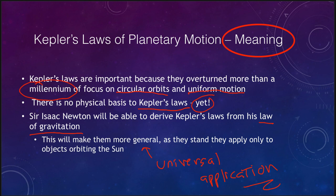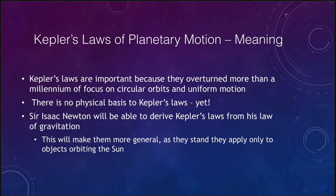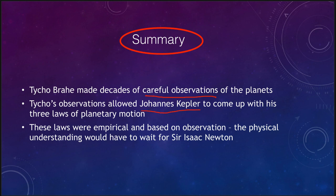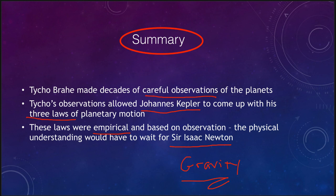To summarize: Tycho Brahe made many years of careful, extremely detailed and accurate observations of the planets — the most accurate of his time. His observations allowed Kepler to derive three empirical laws of planetary motion. These laws were based on observation and lacked a physical explanation, which would have to wait for Sir Isaac Newton and his understanding of gravity. That concludes our lecture on understanding the orbits of the planets and the work of Tycho and Kepler. Until next time, have a great day everyone.